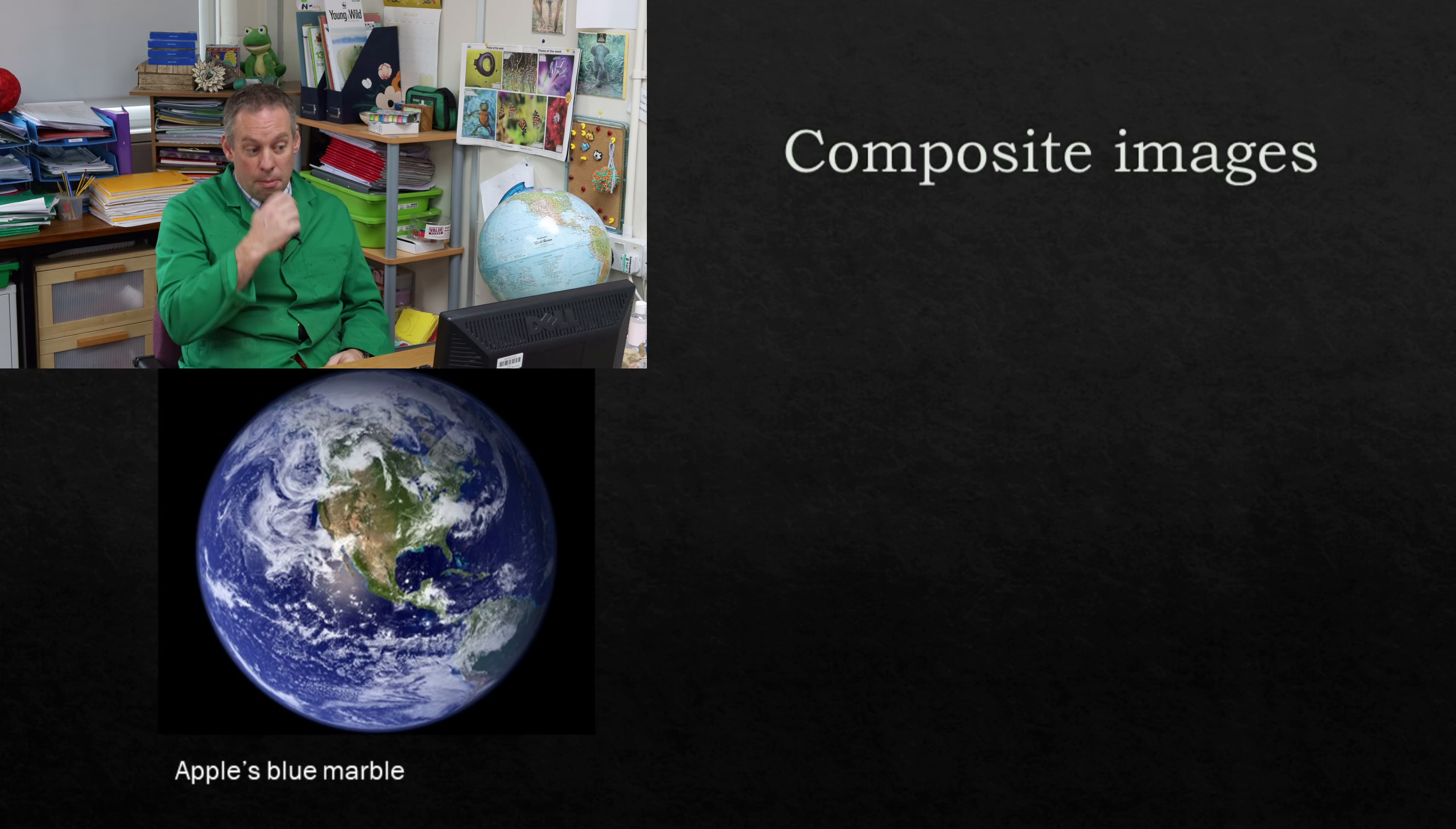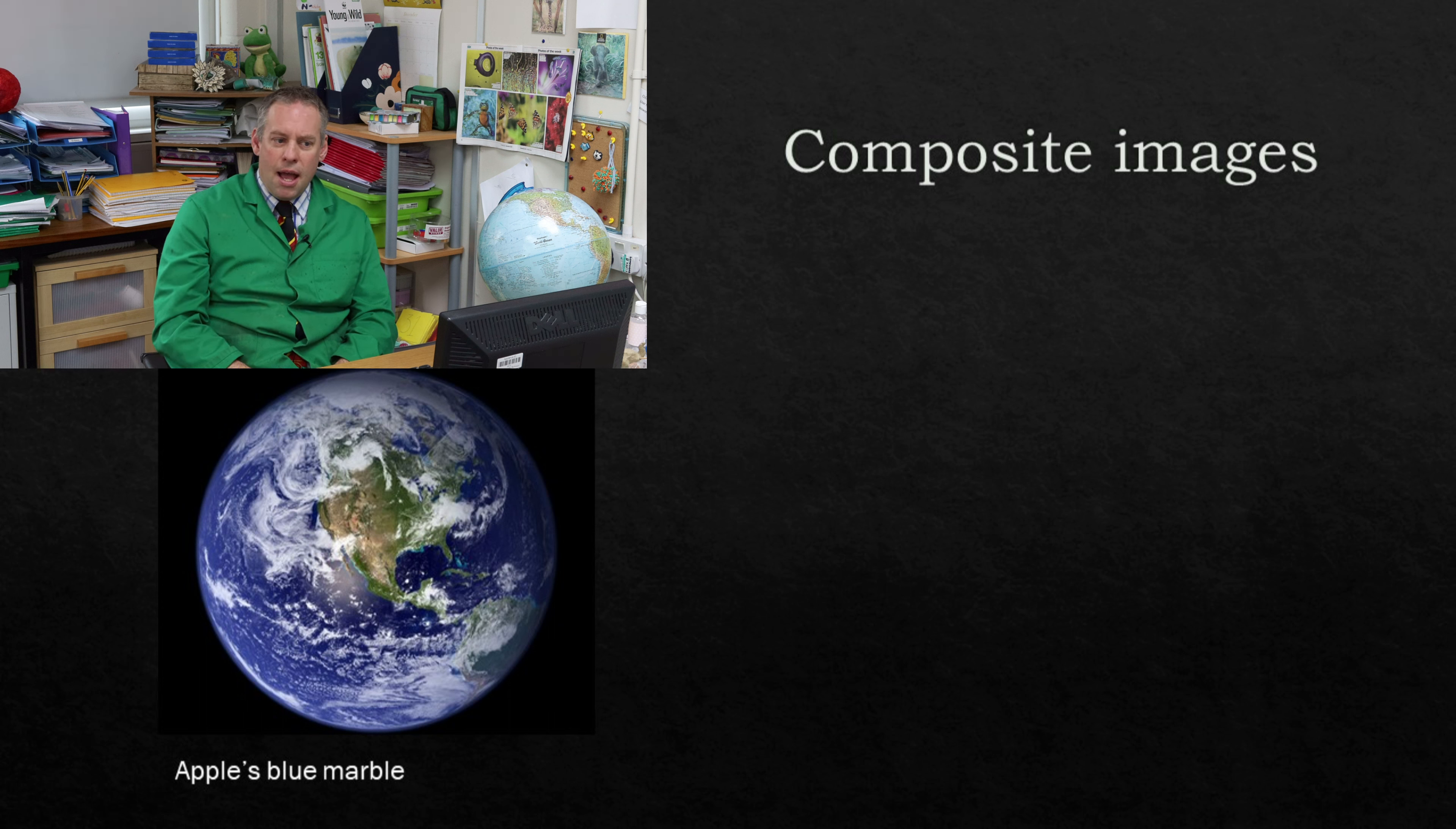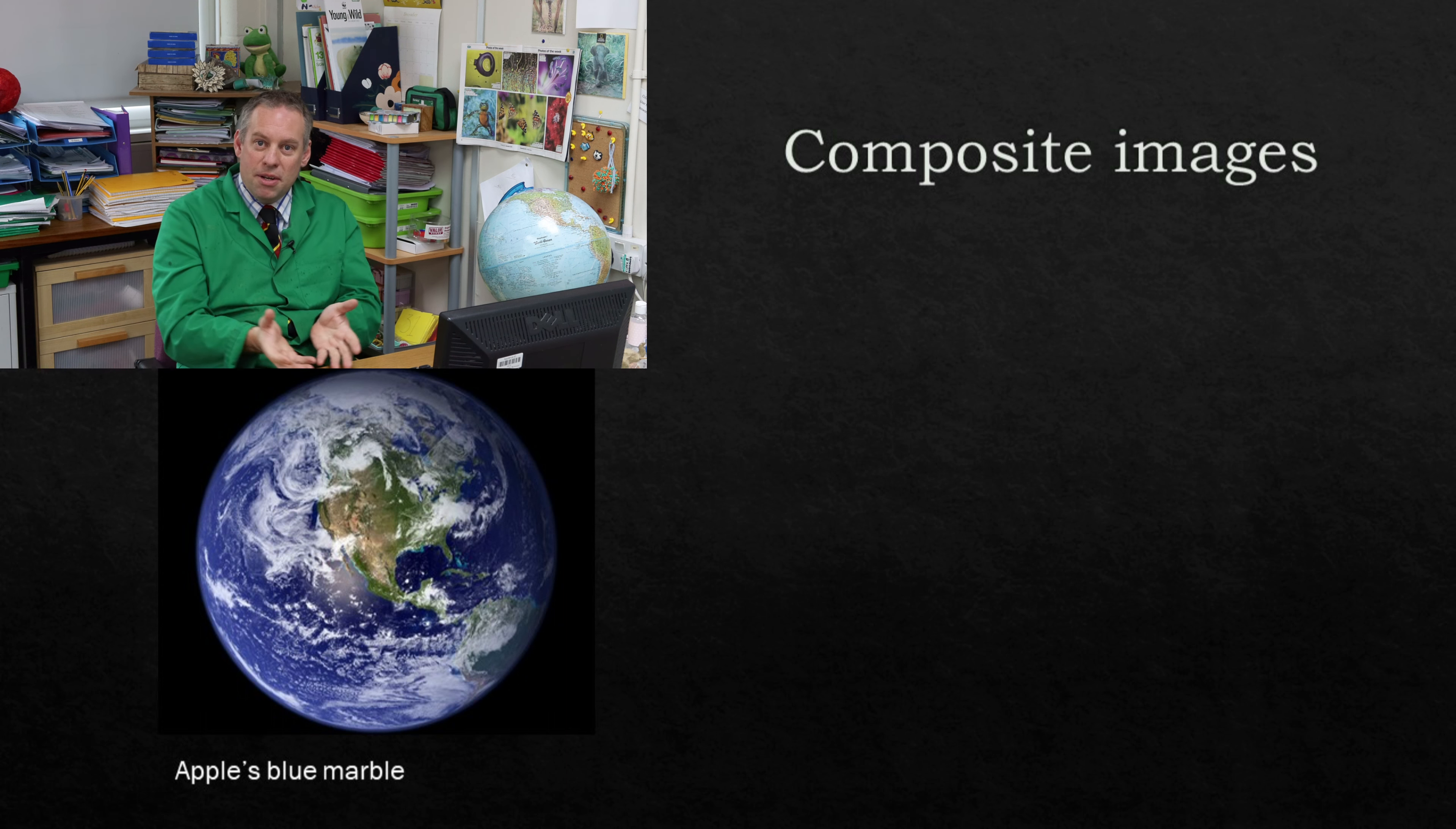Now you'll be used to images of the earth that look like this. This particular picture is something called the Apple's blue marble. This became their desktop image for quite a while and it's actually a really hard image to take because to take a picture of the whole earth you need to be far enough away to get it into your camera lens and the further away you go the less detail you have on your image.